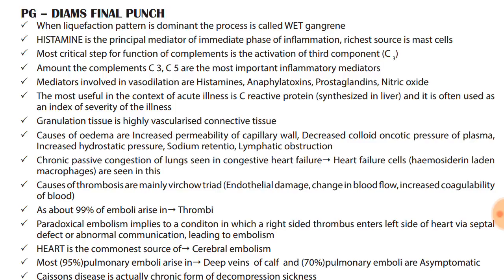About 99% of emboli arise in thrombi. Paradoxical embolism implies a condition in which a right-sided thrombus enters the left side of the heart via a septal defect or abnormal communication, leading to embolism — it enters from right to left through septal defect. Most 95% of pulmonary emboli arise in deep veins of the leg, and 70% of pulmonary emboli are asymptomatic. Caisson's disease is the chronic form of decompression sickness.